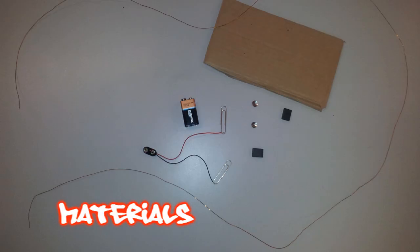To make a simple DC motor you will need the following equipment: a 9 volt battery, copper wire, a magnet, two paper clips, battery clip and a piece of mounting cardboard.